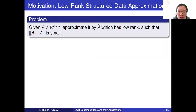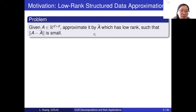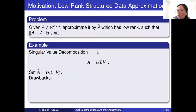Let me talk about the low-rank approximation problem mathematically. If our data is represented by a matrix, assume A is a d-by-d matrix. Our main goal is to approximate the d-by-d matrix by using a low-rank matrix A-hat. To measure whether A-hat is a good approximation for A, we measure the distance between A and A-hat — we want the norm of A minus A-hat to be as small as possible. You can consider this to be the spectral norm or the Frobenius norm. One natural idea is to consider the SVD decomposition for matrix A: A equals U times Sigma times V-transpose. If we want to find the best rank-R approximation for A, then we can set A-hat equals U_R times Sigma times V_R-transpose.